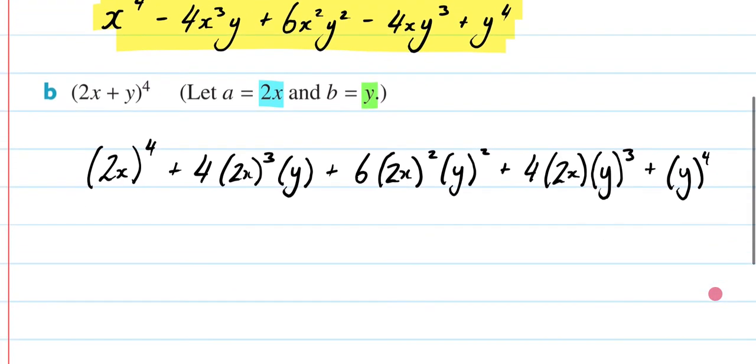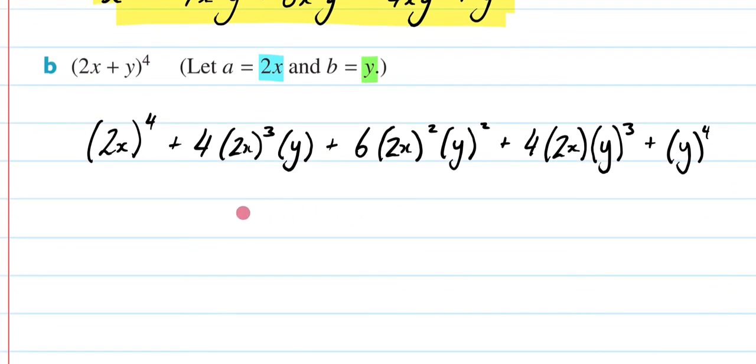You can imagine the only mistake here would just be a mistake in accidentally writing down the wrong thing. Conceptually, it's kind of hard to make a conceptual mistake here. So 2 raised to the 4, that's going to be 16x to the 4. Then I'm going to get plus. Now, 2 to the 3, that's going to be 8. 8 times 4 is 32xy. Plus 2 to the 2 is 4, times 6 is 24. 24x squared, y squared.